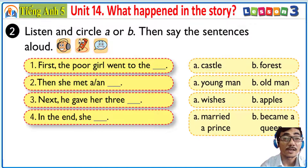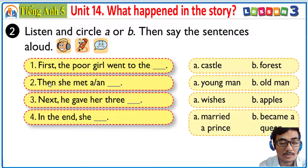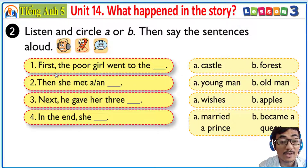Now, we move on to Activity number 2: Listen and circle A or B, then say the sentences aloud. First, you take a closer look at these sentences: one, two, three, four. There are two options, A and B, for each sentence. Now you listen and circle A or B.